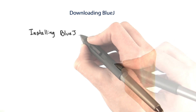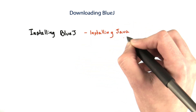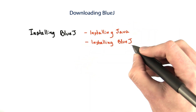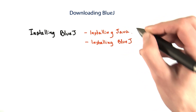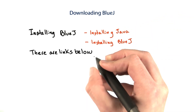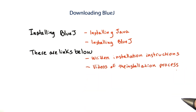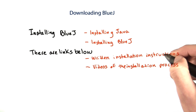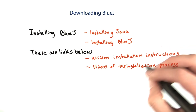Kai and I are going to help make sure you get BlueJ and the course code installed and downloaded. Installing BlueJ will have two main parts: installing Java, and installing BlueJ. You might not notice this part if you're on a Mac. There are links below that'll help guide you — written installation instructions and some videos of the installation process. You'll need to pick the right instructions for your operating system: Mac or Windows.